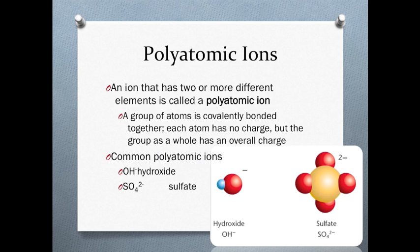Polyatomic ions are charged groups of two or more elements covalently bonded together. While each atom itself is not charged, the group as a whole has a charge. One very common polyatomic ion has the formula OH-, a polyatomic anion called hydroxide. It's formed from the combination of a hydrogen atom and an oxygen atom, with an extra electron.